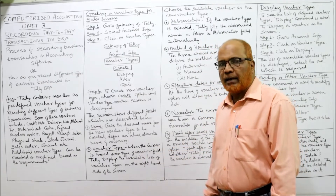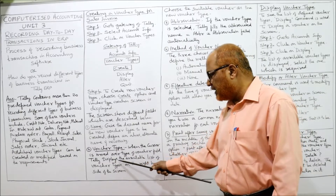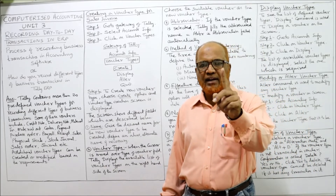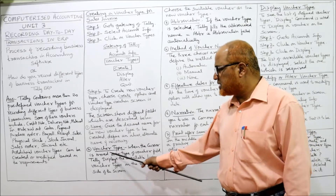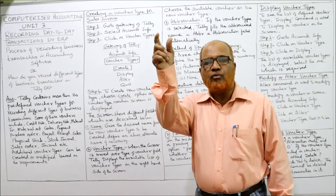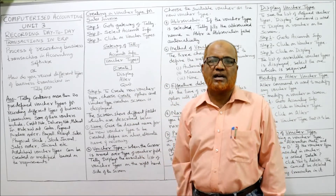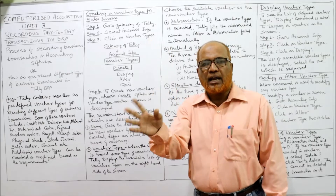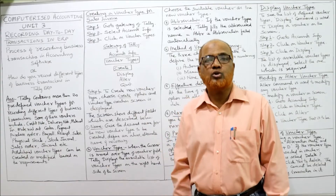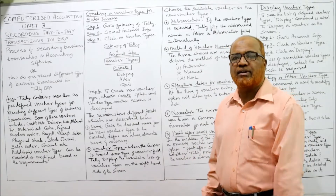The next field is Voucher Type — what type of voucher you require. When the cursor is moved over the Type of Voucher field, Tally displays the available list of voucher types on the right-hand side of the screen. You have to select from this list which voucher type you want to create.